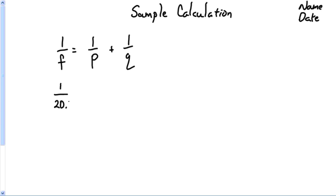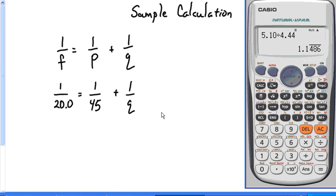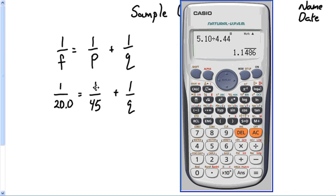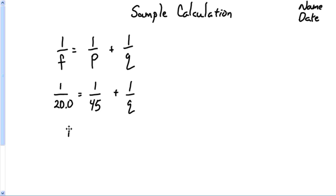In this lab I gave you your f, and we're going to use 20 — even though that may not be entirely accurate. If you found your own f and want to use that number, that's fine; it'd still be very close to 20. For our very first trial we used 45 for p. Now I want you to figure out what q is. I'm going to subtract 1/45 from both sides, giving me 1/20 minus 1/45. The answer is 1/q = 1/36.